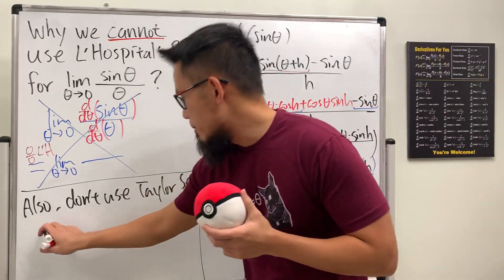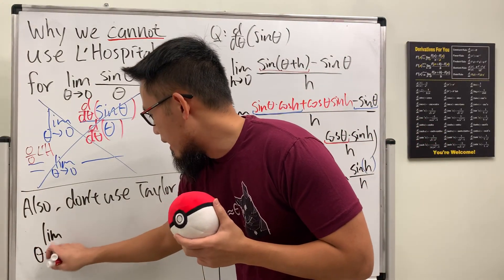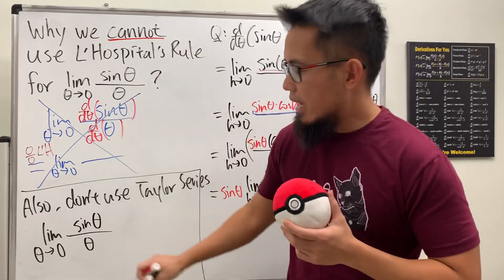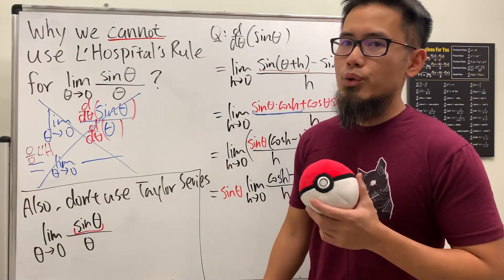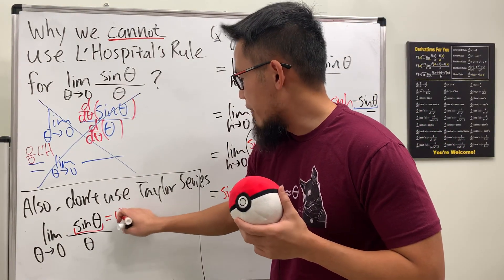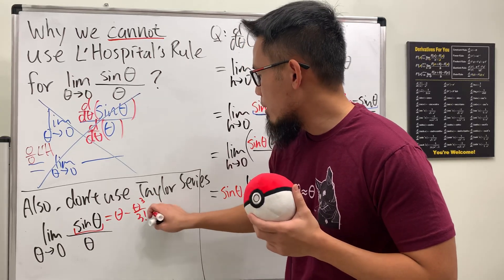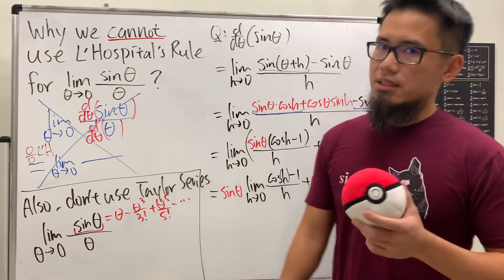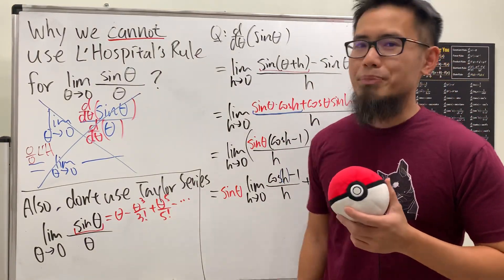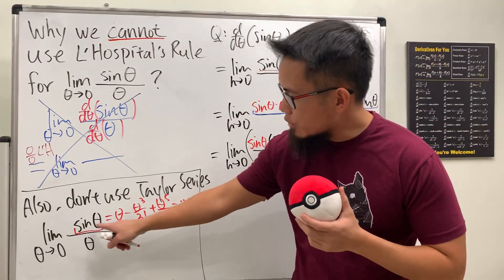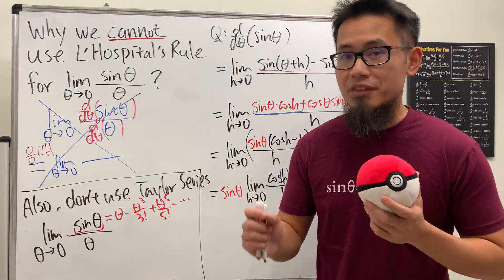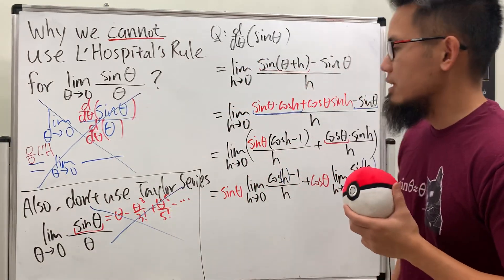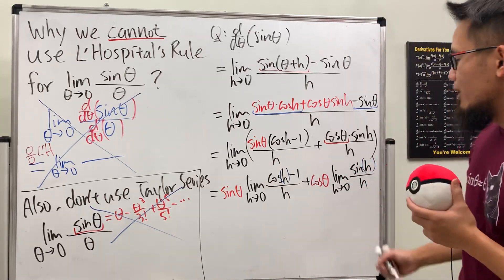Also, please don't use Taylor series. A lot of people, once they get to Calculus 2 and have seen the Taylor series, will say the limit as theta→0 of sine(θ)/θ and expand sine(θ) as θ − θ³/3! + θ⁵/5! and so on. But the problem is: in order to show that sine(θ) equals that Taylor series, you actually have to rely on the derivative of the sine function again. So no Taylor series either.